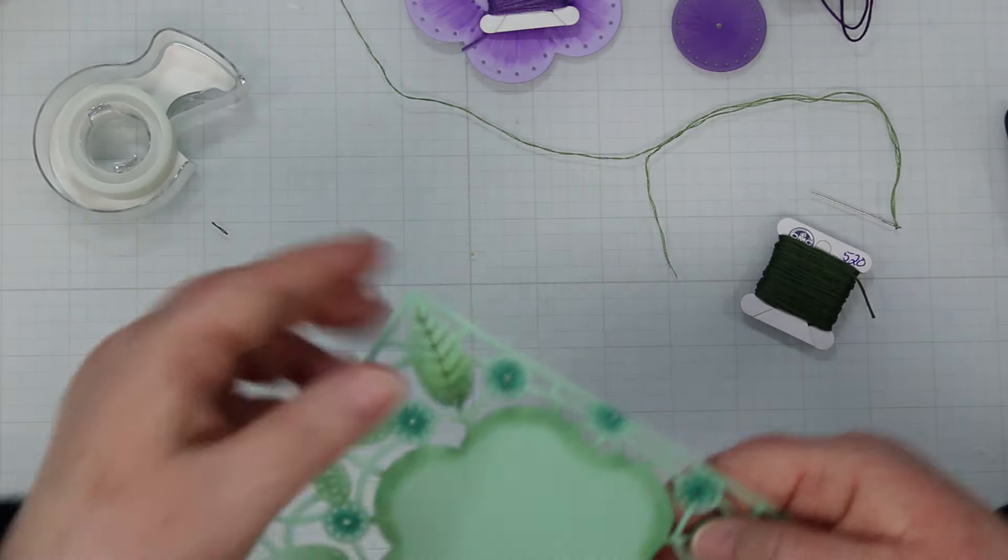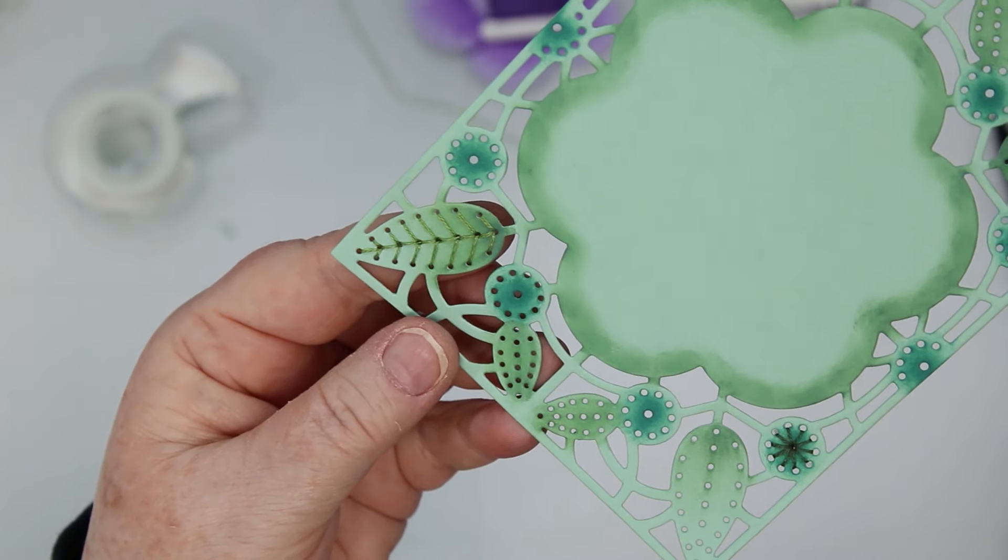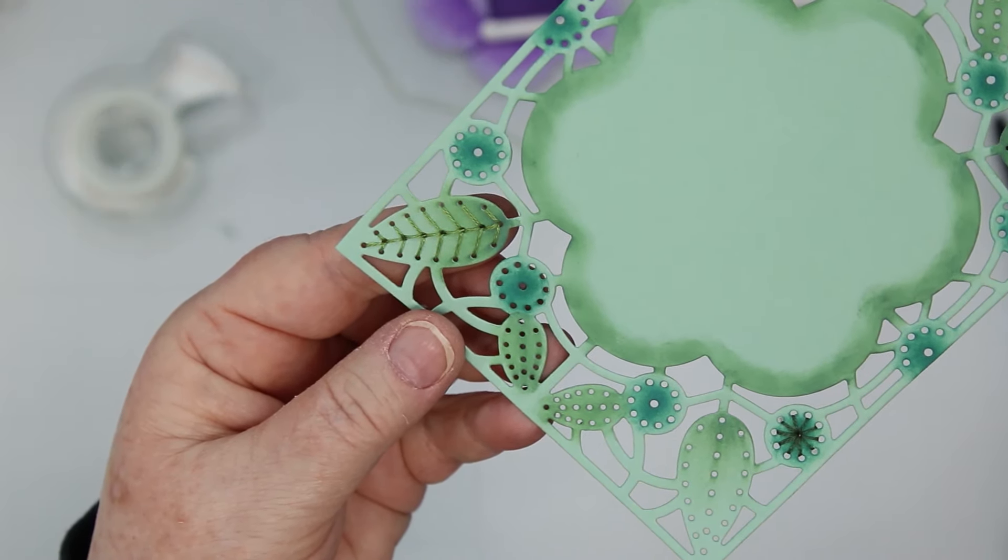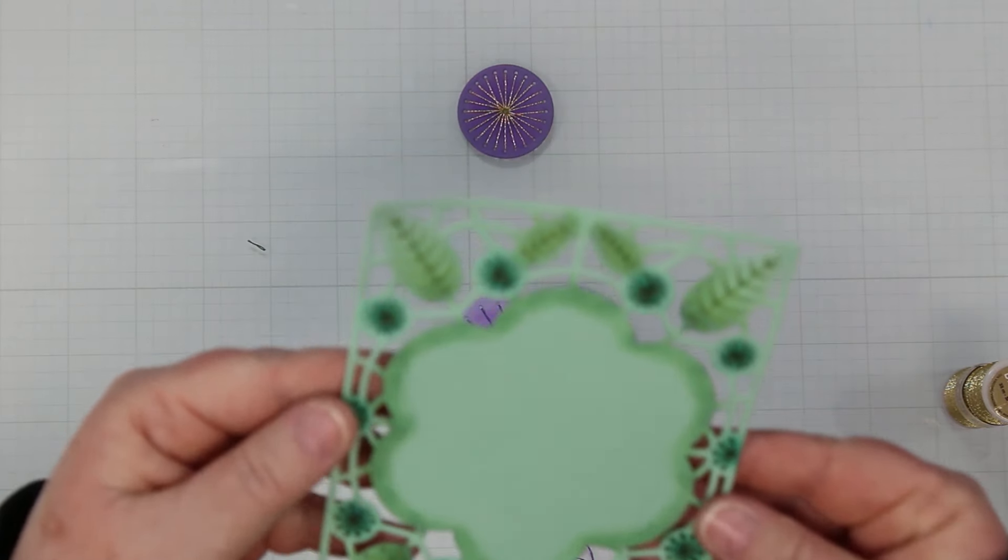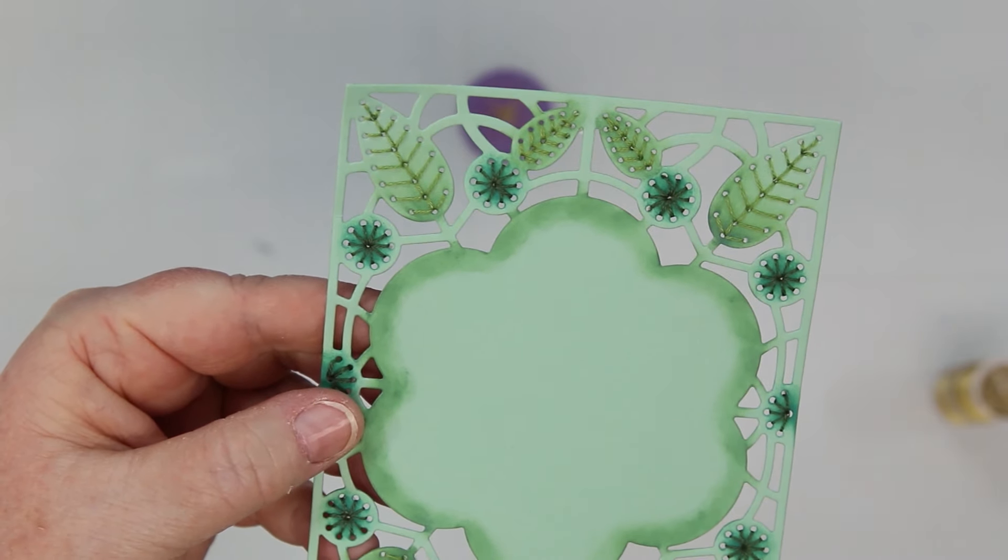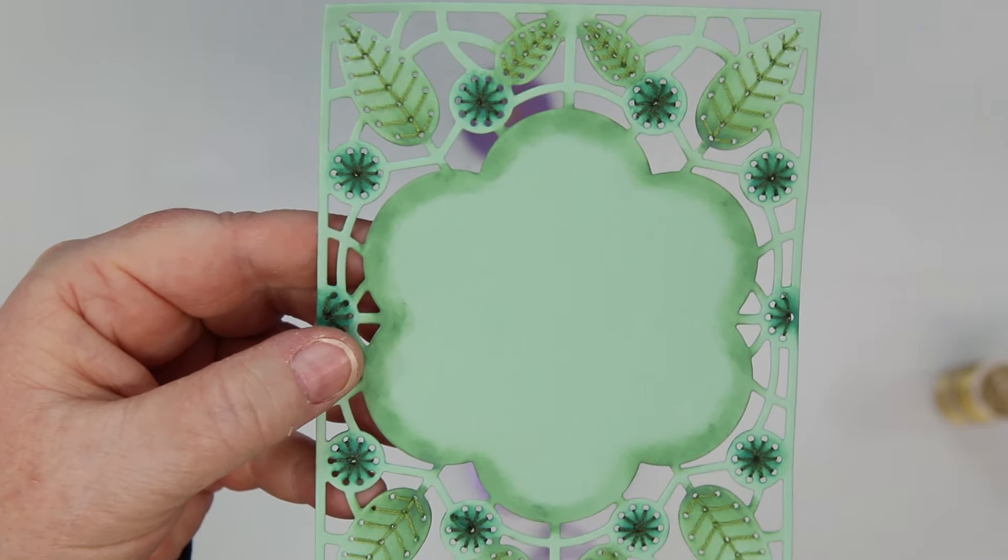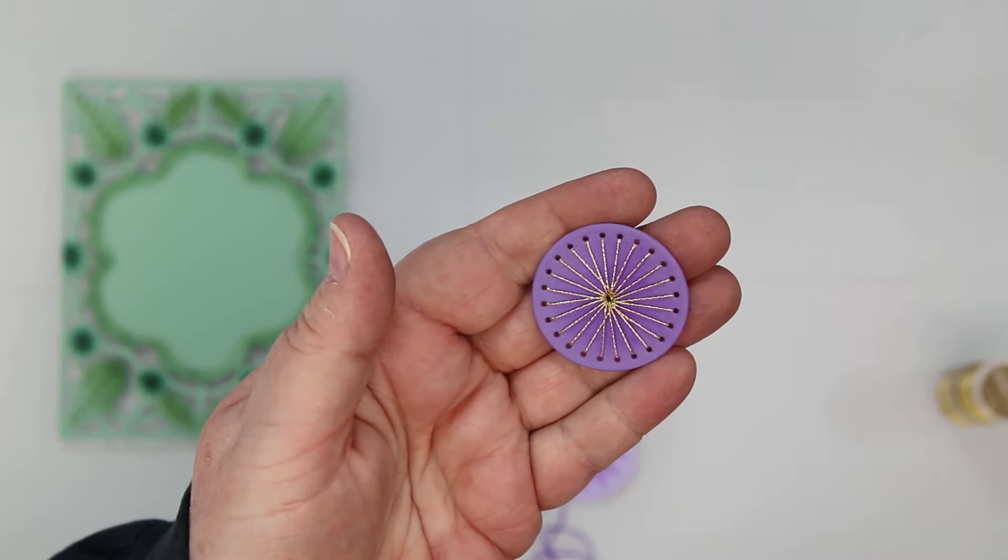And so you're going to go all the way around and do this to the entire piece. There it is up close for you so you can see I like the dark and the light combination. Okay so here it is all finished. Hopefully I can get my camera to zoom in for you. Nice subtle detail for the background and it looks beautiful on top of the waterfall. And I decided on gold amazingly.